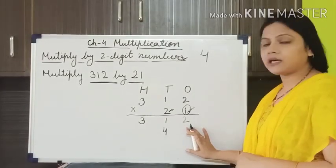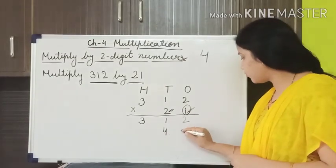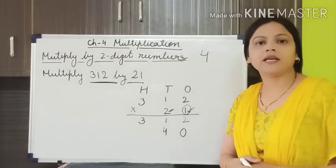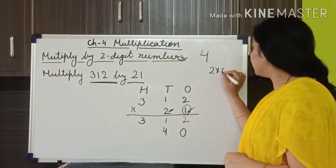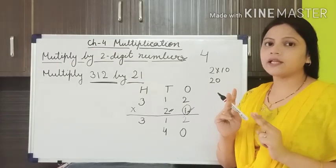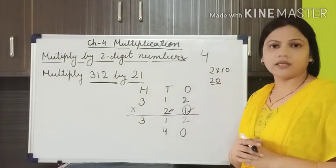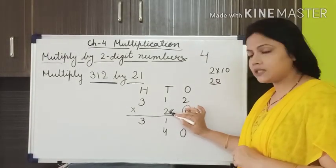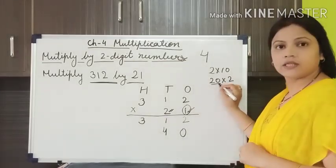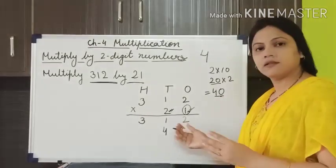Then what do we write here at the 1s place? Because we have started our writing from the 10s place, we have to give a 0 at the 1s place. Why? This 2 is placed at the 10s position. 2 tens equal 20. So if I am multiplying 20 by 2, the result will be 40. So 40 is written here.